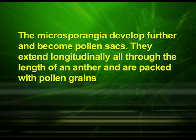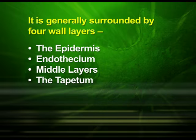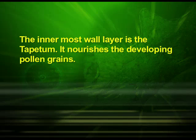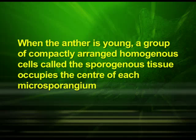In a transverse section, a typical microsporangium appears nearly circular in outline. It is generally surrounded by four wall layers: the epidermis, endothecium, middle layers and the tapetum. The outer three wall layers perform the function of protection and help in dehiscence of the anther to release the pollen. The innermost wall layer is the tapetum, which nourishes the developing pollen grains. Cells of the tapetum possess dense cytoplasm and generally have more than one nucleus. When the anther is young, a group of compactly arranged homogeneous cells called the sporogenous tissue occupies the center of each microsporangium.